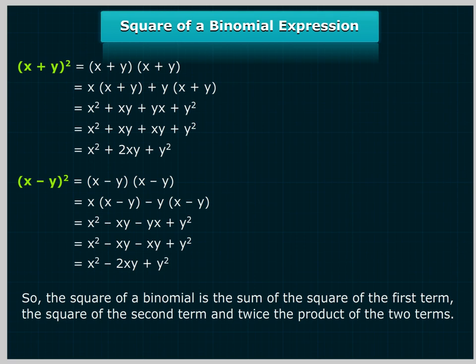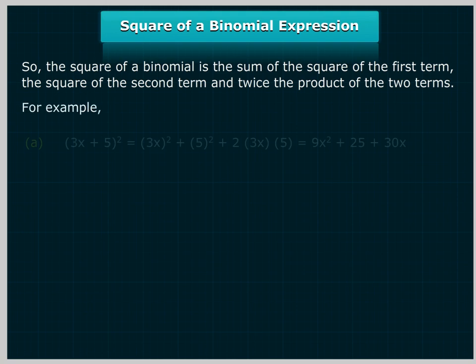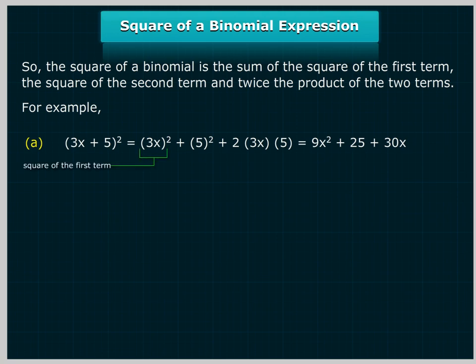So, the square of a binomial is the sum of the square of the first term, the square of the second term, and twice the product of the two terms. For example, (3x + 5)² = (3x)², square of the first term, plus 5², square of the second term, plus 2 × 3x × 5, twice the product of the two terms, which equals 9x² + 25 + 30x.